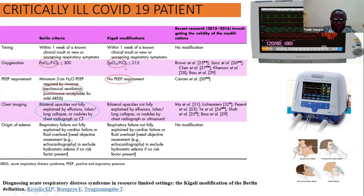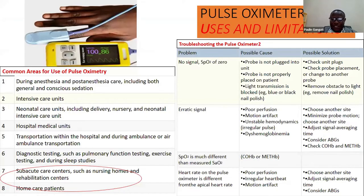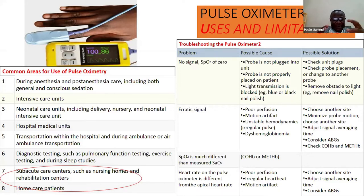SPO2 has helped a lot to tackle ARDS at the beginning. The pulse oximeter is part of the standard monitor for safety and has revolutionized medicine, especially perioperative medicine and care. Not only does it provide saturation, but also the heart rate — the arrhythmias.